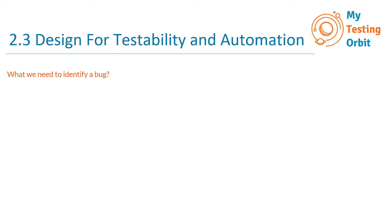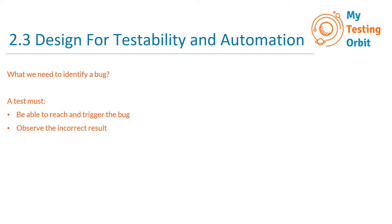Now let's look at an example. When we are testing any software, to identify a bug, a test must be able to reach and trigger the bug — because if we are not able to reach and trigger that bug, we will not be able to identify that the system is not working as expected. Also, a test must be able to observe the incorrect result. These two requirements mean that we do require the testability capability, and these two are not possible unless we have a defined architecture. That's why these three parts are really important for design for testability.